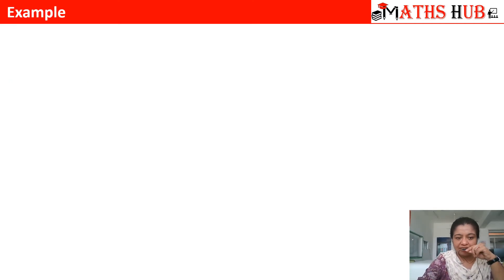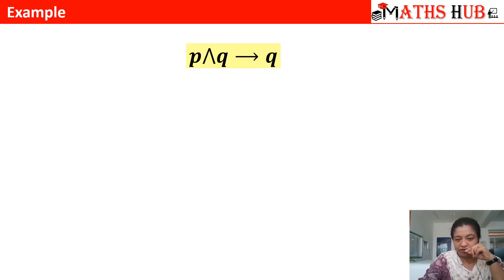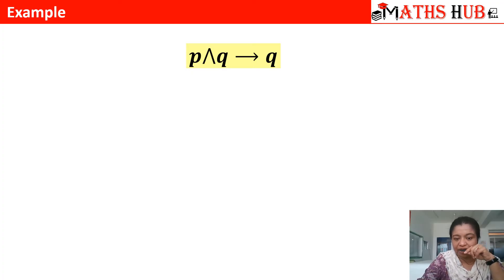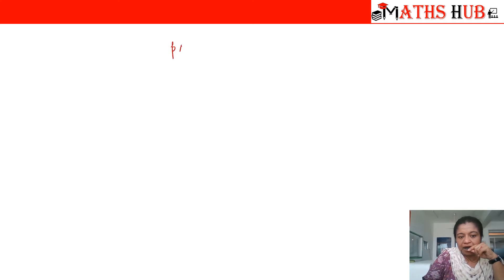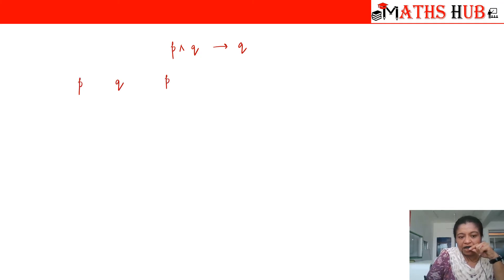Let us check an example. We have (p∧q)→q. In my previous video I've already told you how to construct the truth values of a compound proposition, so if you haven't checked it please do so. When we make the truth table for (p∧q)→q, the inputs are p and q, then we have p∧q, and finally (p∧q)→q.